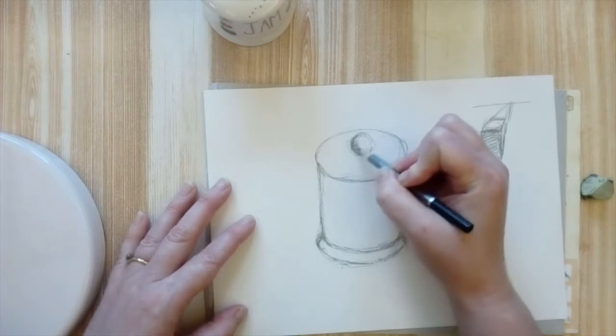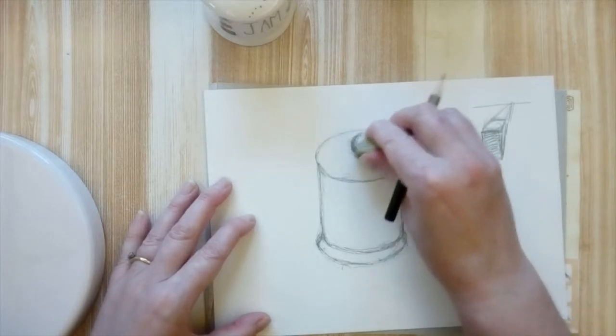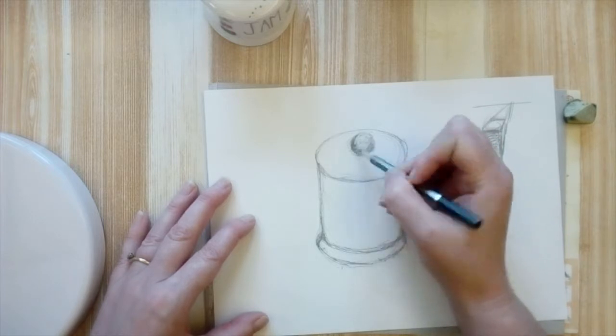Once you're happy with the shape of your drawing, then you can start adding the shade. So you can do directional shading or you can shade in more or less all the same direction.